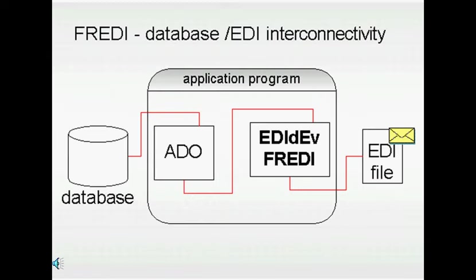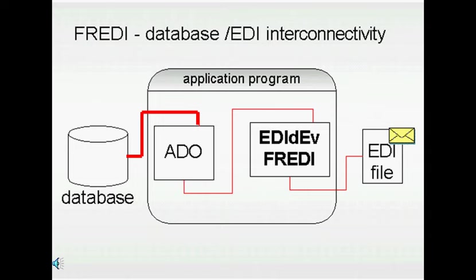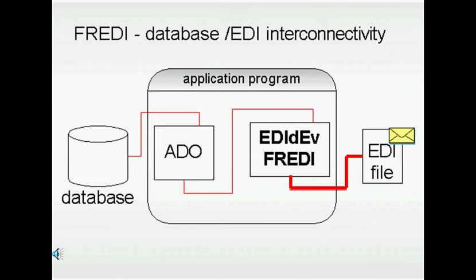Here is one example of how one can use, in an application, the FREDICCOM and the ADOCOM to interconnect the EDI file to a database. The ADOCOM would be used to access a database. In the application, the values of the database fields returned by the ADOCOM are mapped to the properties of the FREDICCOM. The FREDICCOM would be used to construct or parse an EDI file.